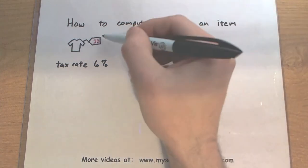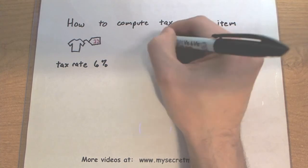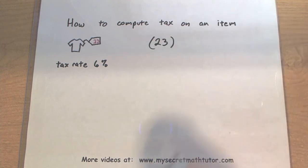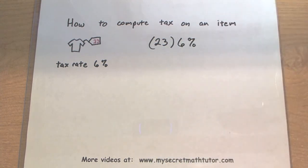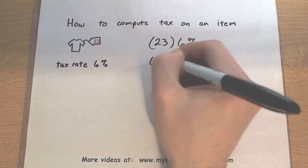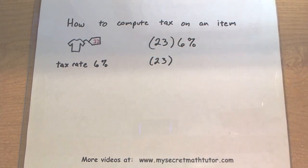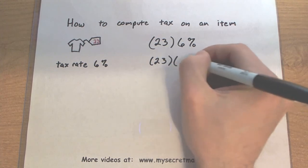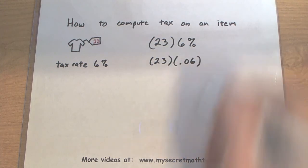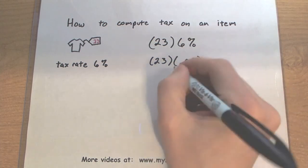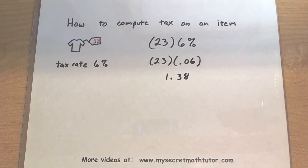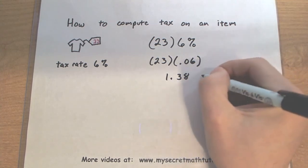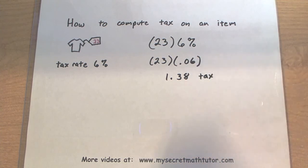The trick is to take the price of the item — in this case $23 — and multiply it by 6%. In order to make things work out correctly, we want to change our percent into a decimal, so I'm actually going to multiply by 0.06. After doing so, this gives me 1.38. This number here is actually what I will pay just in tax — it doesn't include the original amount of the shirt.